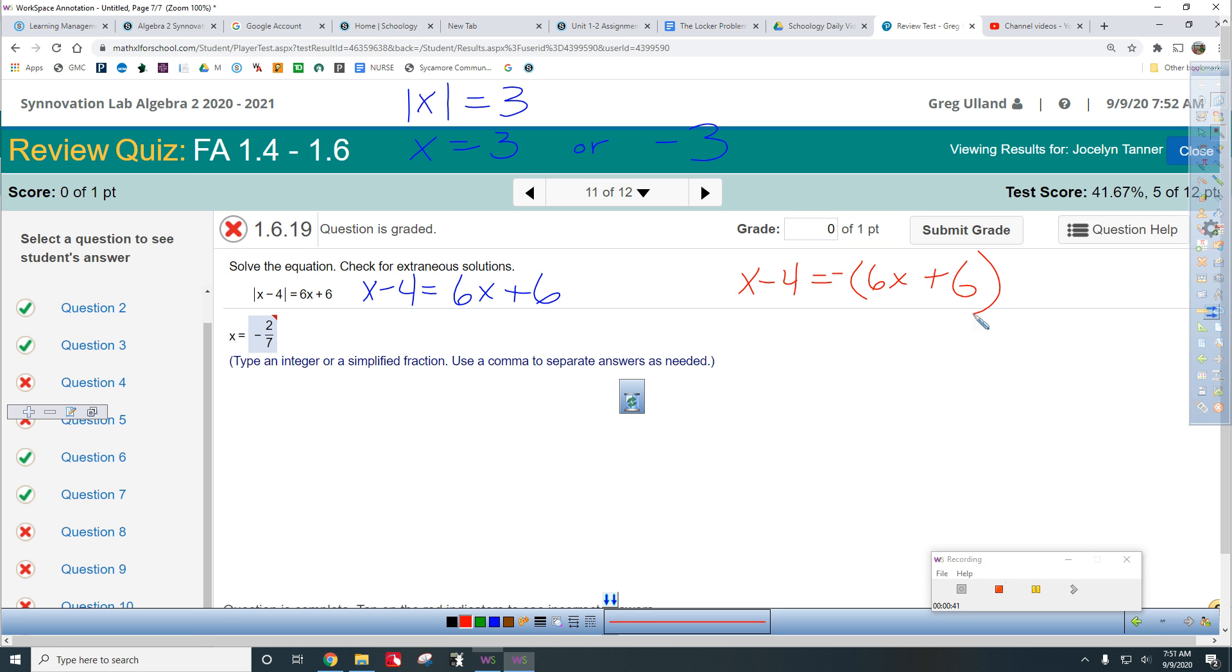And the strategy is to solve each of these and then check both of your answers. Sometimes things get weird. So subtract x from both sides, and that's gone. So you get negative 4 is 5x plus 6.